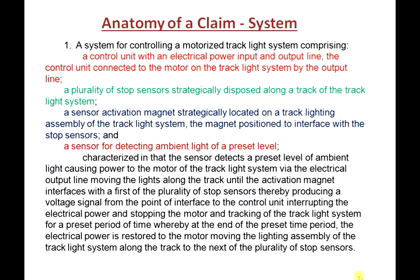Here's the anatomy of a system claim — a system claim for controlling a motorized track light system. It has a control unit, a plurality of stop sensors, a sensor activation magnet, and a sensor for detecting ambient light. This one has something a little different: a wherein clause, which is a functional clause that tells you more about the relative interaction of the various parts with one another. You should read this and see how it finishes up the description of the system claim.